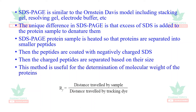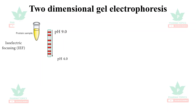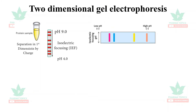This method is useful for determination of molecular weight of proteins. The Rf is calculated by distance traveled by the sample divided by distance traveled by the tracking dye. In two-dimensional electrophoresis, the protein sample is first loaded and travels based on isoelectric focusing — a separation based on charge — from higher pH to lower pH.